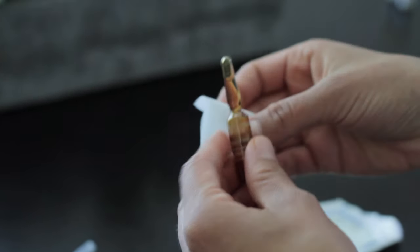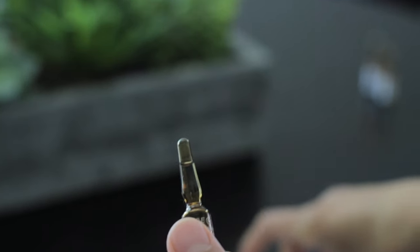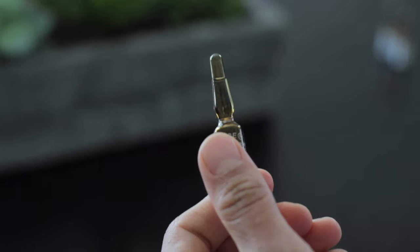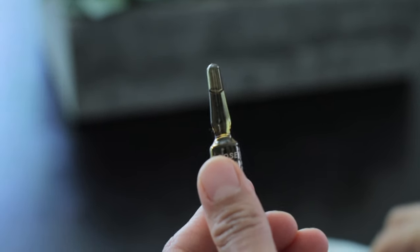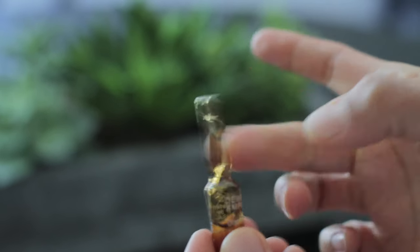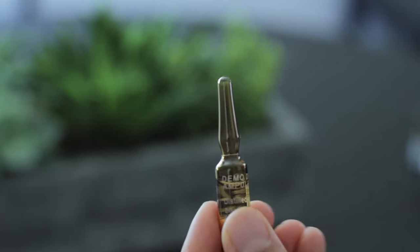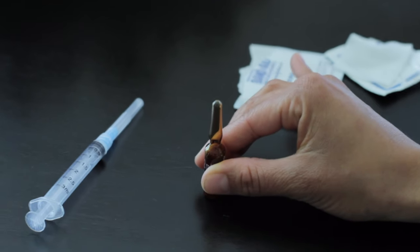All right, so grab that alcohol prep. You're going to clean the neck. Make sure you clean it for 30 seconds and allow it to dry. So while that's drying, I also want you to take a look at the medication here on the tip. We're going to have to flick that. So if you flick it with your finger, you'll notice it drops to the bottom and collects in the body of the ampule.